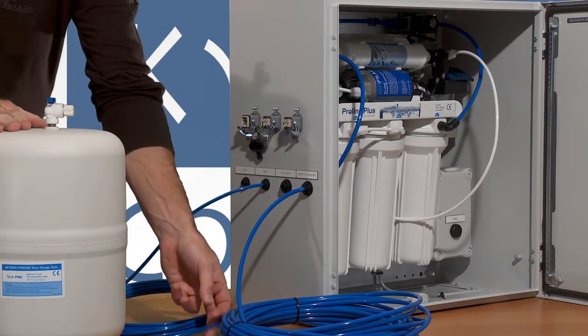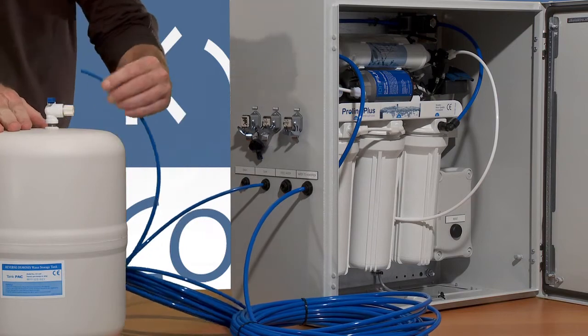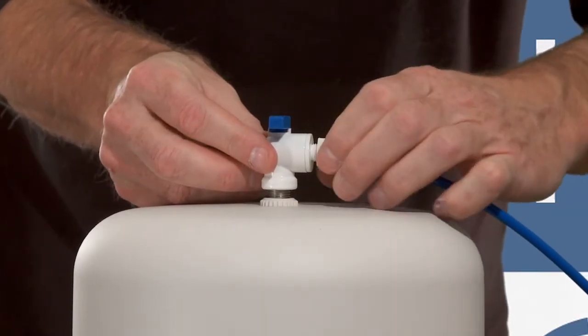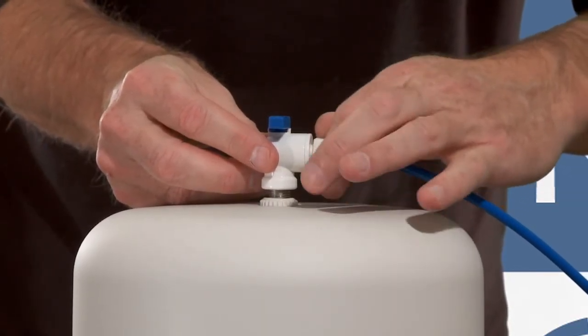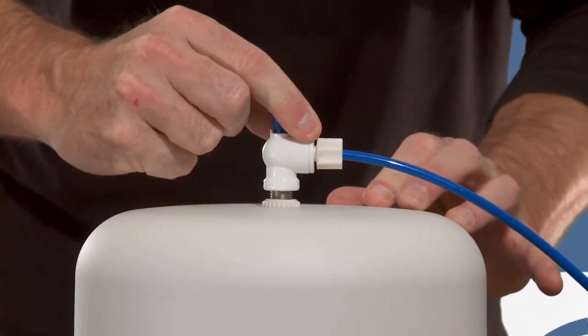The 6mm tubing is also attached to the buffer tank, which is supplied to guarantee a continuous supply of water to the humidification system.